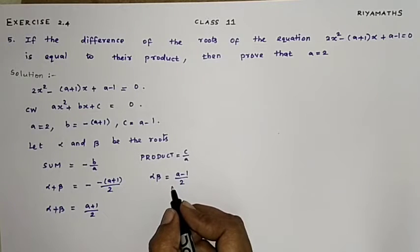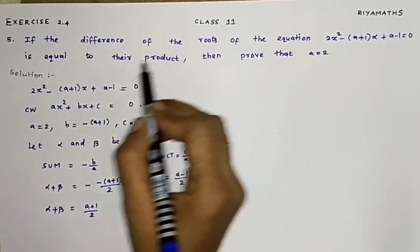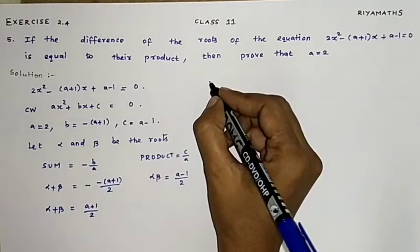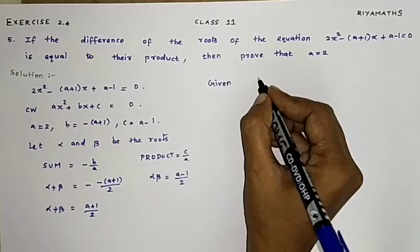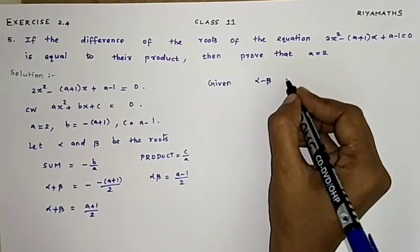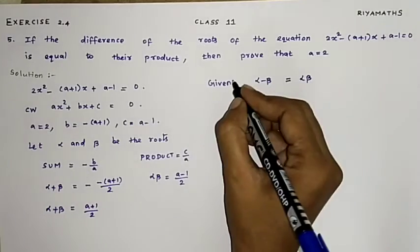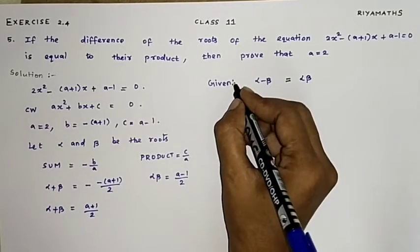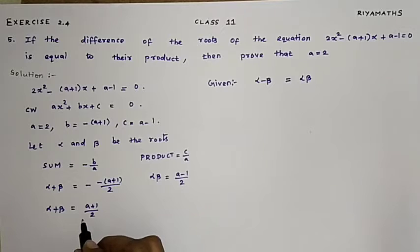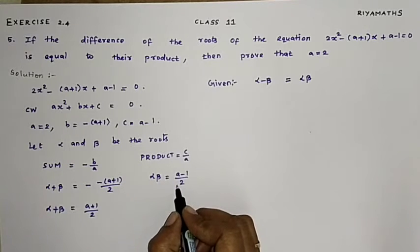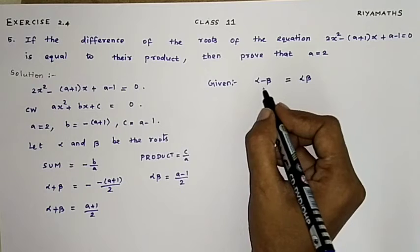From question number 5, the difference of the roots is equal to their product. So the difference means alpha minus beta, which is equal to their product, alpha times beta. We apply the values of alpha plus beta and alpha beta. Alpha beta equals alpha minus beta.